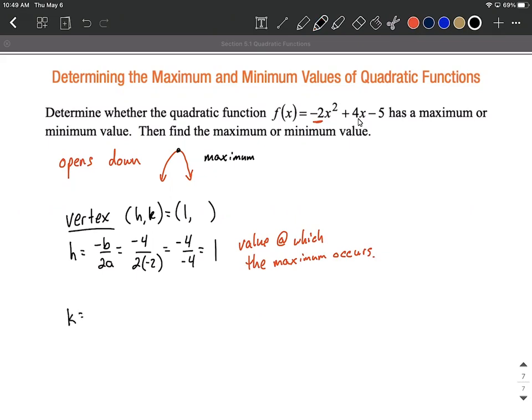Next up, we want to find k from our vertex, the y-value for our vertex. The easiest way to do this is take the x-value we already found, plug it back into the function, and replace each of those x's with 1.